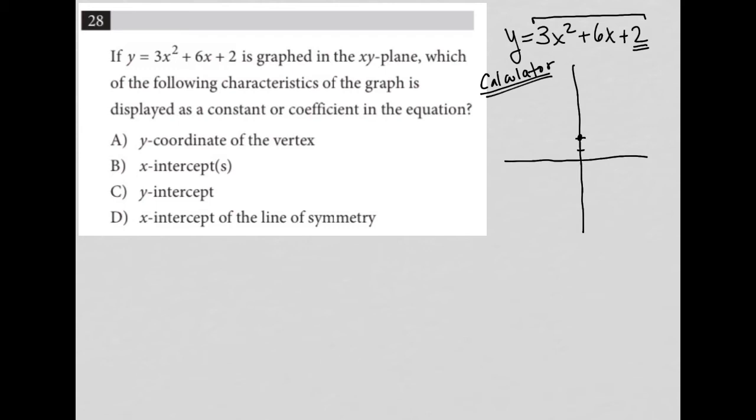Then it says, which of the following characteristics of the graph, right, so you're looking at your graphing calculator, which of the following characteristics of that graph that you see is displayed as a constant or coefficient in the equation?